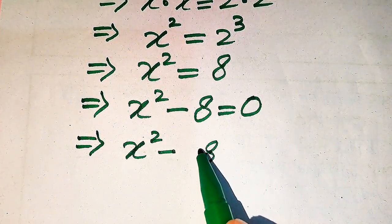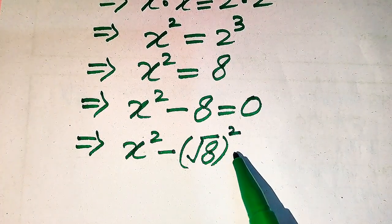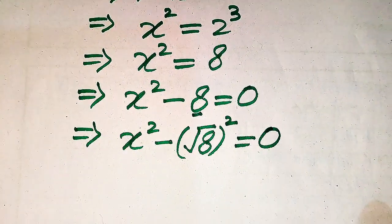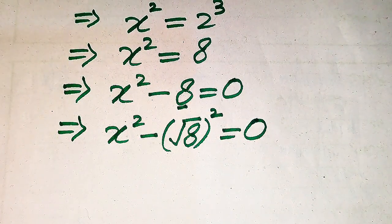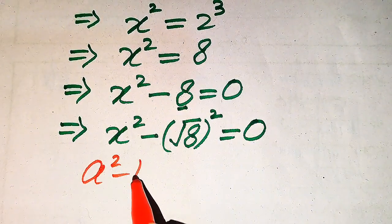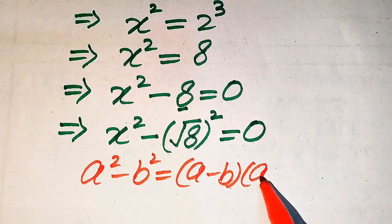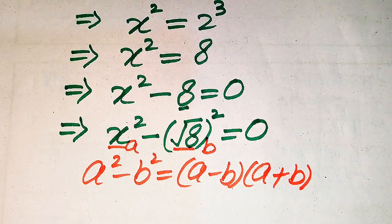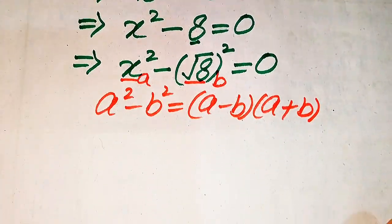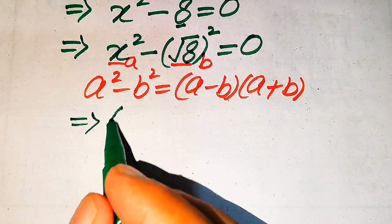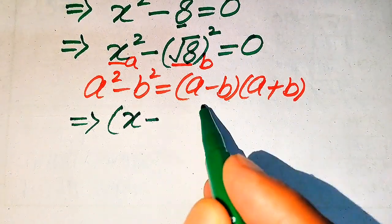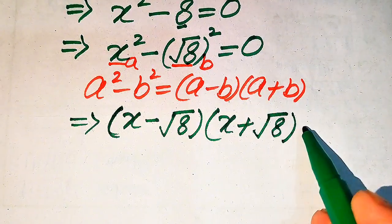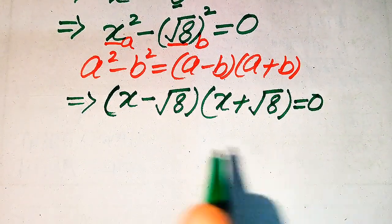We rewrite this equation as x squared minus the square root of 8 whole squared equals 0. Now we apply the algebraic formula: a squared minus b squared equals (a minus b)(a plus b). Here the base of the first term is our a and the base of the second term is our b. So we expand the equation as (x minus square root of 8)(x plus square root of 8) equals 0.